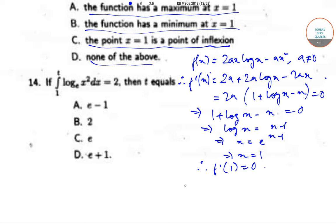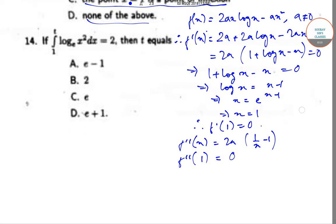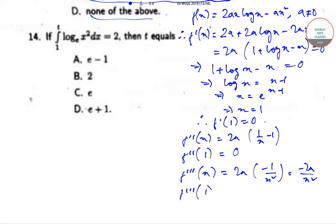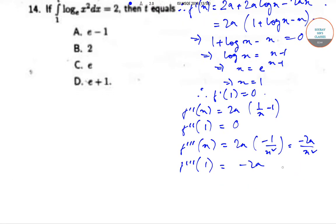f''(x) = 2a·(1/x − 1). So f''(1) = 2a·(1 − 1) = 0. This is inconclusive since it equals 0, so we need to go to the next derivative.